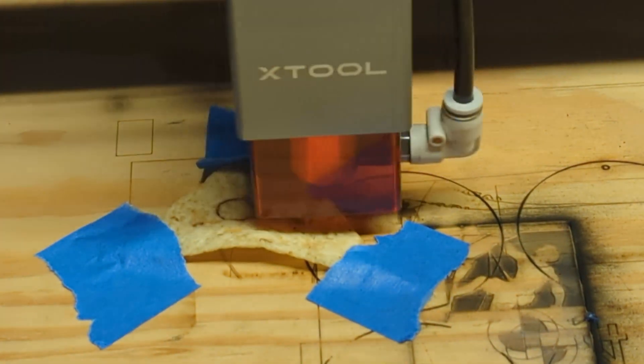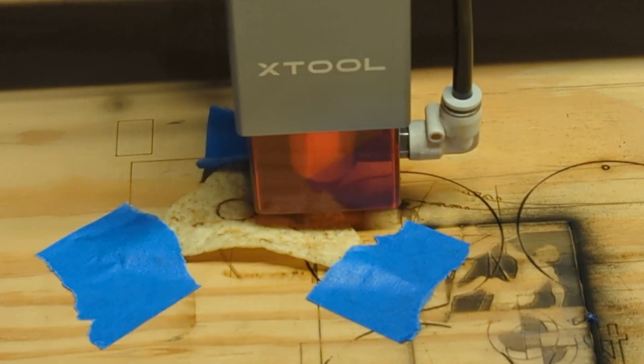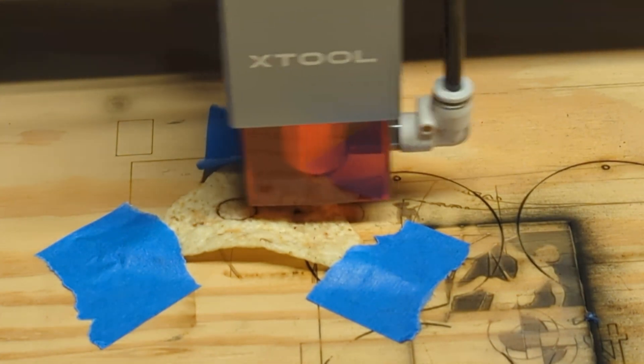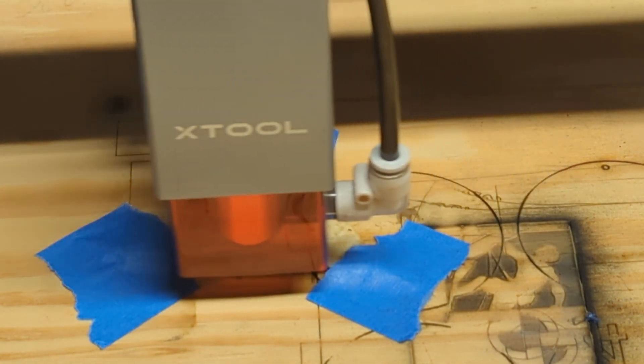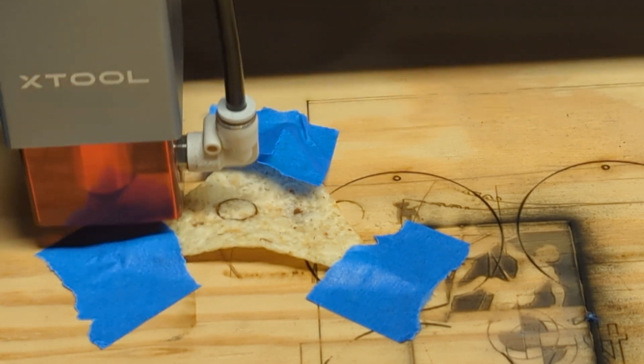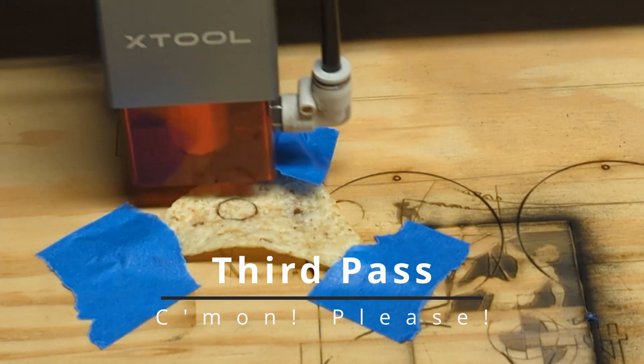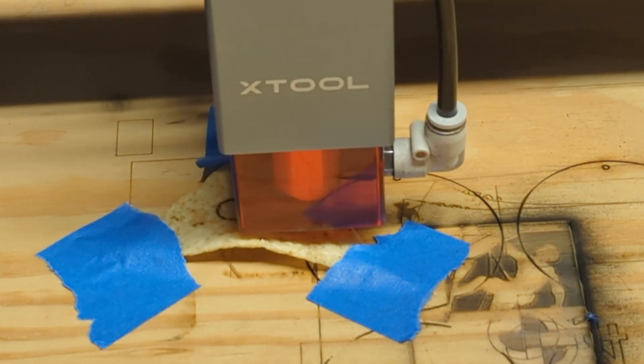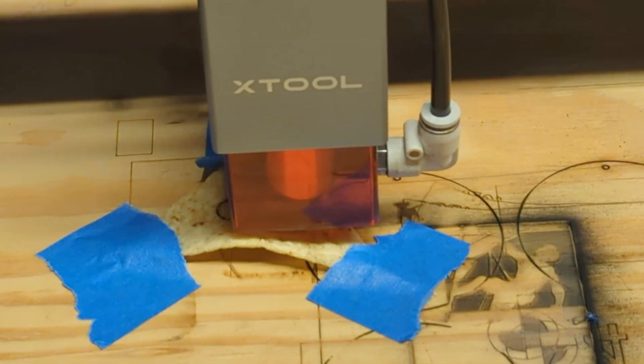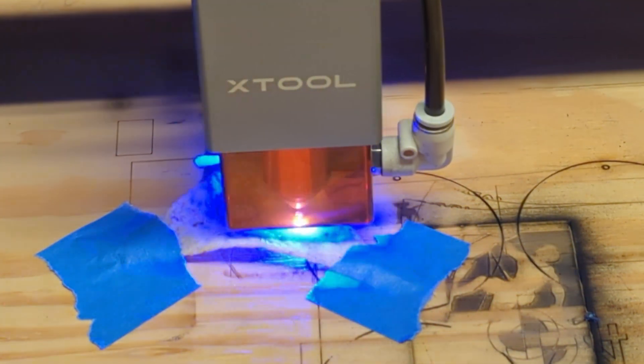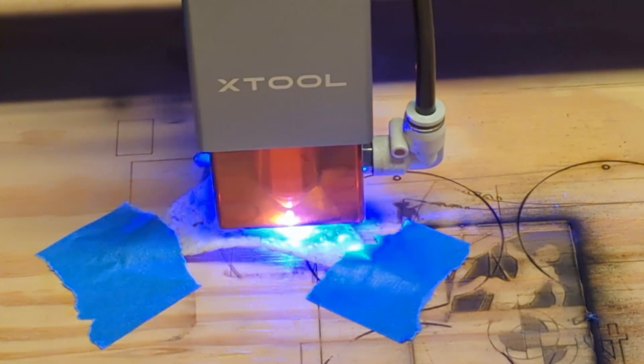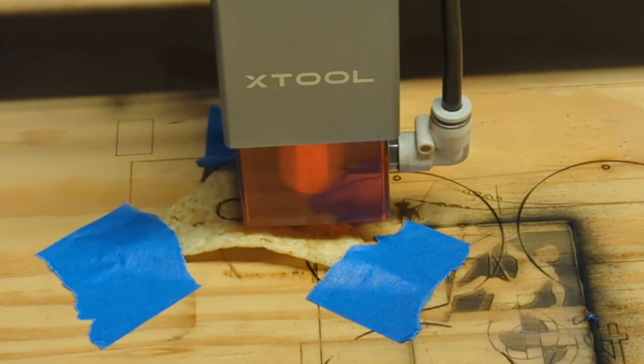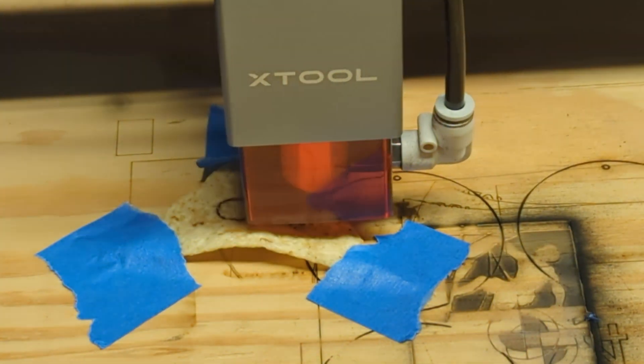Now I did fiddle with the settings just a tiny bit in between each pass. What I put up at the beginning of this little segment was the final settings. So I believe I increased the power and slowed it down a little bit, but the final settings were the ones that I provided to you. Even though this wasn't entirely successful, it did smell really good. I don't think there's any toxic fumes put out by etching tortilla chips, but if there are then I think it's really good. They smell really good.